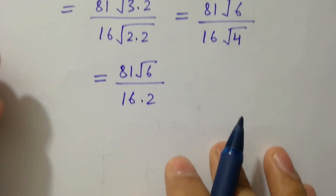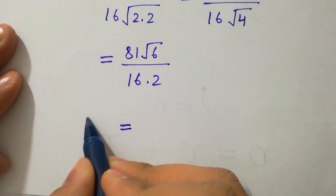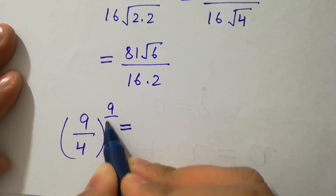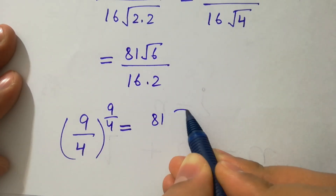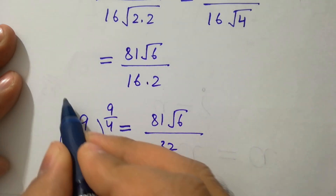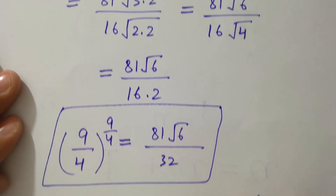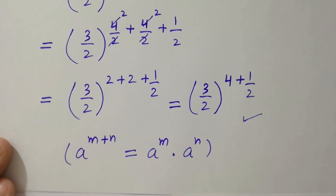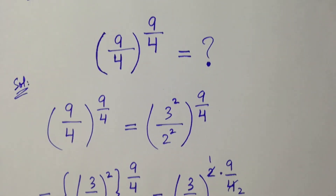So finally we get our answer: 9 over 4 to the whole power 9 over 4 is equal to 81 square root of 6 over 32, which is our final answer. Thanks for watching this video. Please subscribe to this channel to get notifications of my new videos, and don't forget to share these videos with your classmates and friends so that they also benefit. Okay, bye.